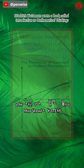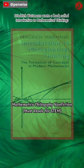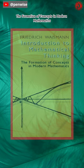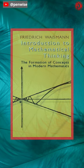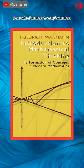Friedrich Weissmann wrote a book called Introduction to Mathematical Thinking, The Formation of Concepts in Modern Mathematics. It looks at how mathematical ideas have changed over time, from natural numbers to complex numbers.